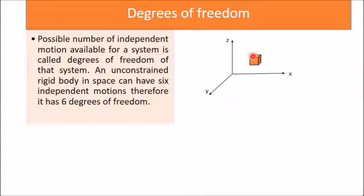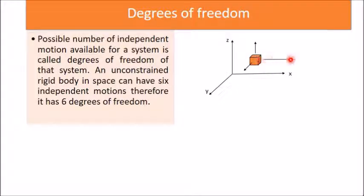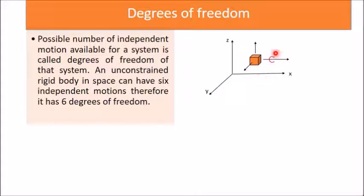Here I have taken one example: a cubical block kept in 3D space. It can have six independent motions — three linear motions along the x, y, and z directions (including negative directions), and three rotational motions with respect to the x, y, and z axes. So there are six possible motions for this block.